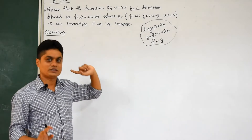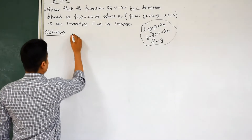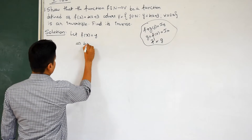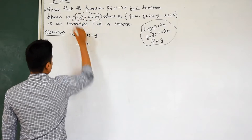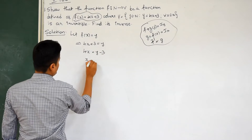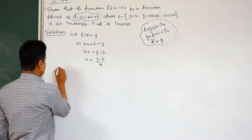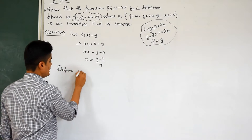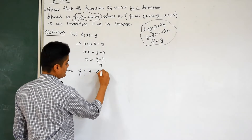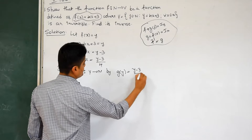The solution is as follows. First, obtain g. Let f(x) = y, which implies 4x + 3 = y, so 4x = y − 3, and x = (y − 3)/4. Using this, define a function g from the reversed domain and codomain, by g(y) = (y − 3)/4.